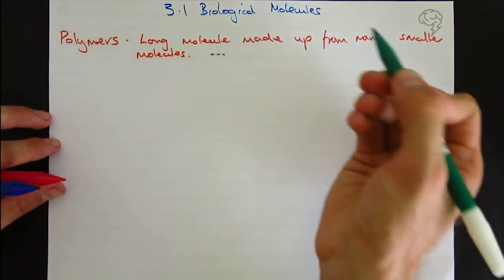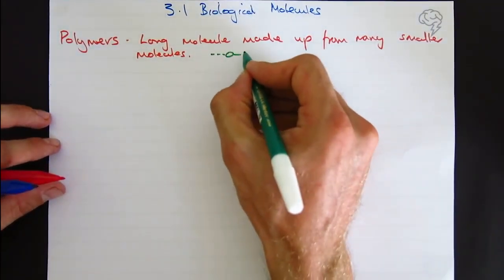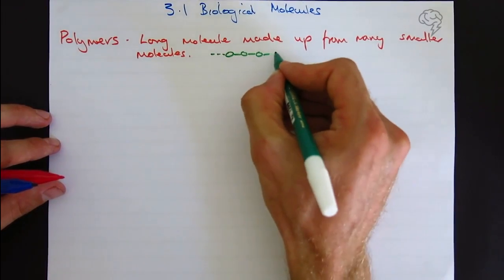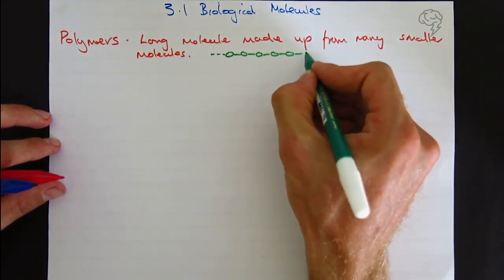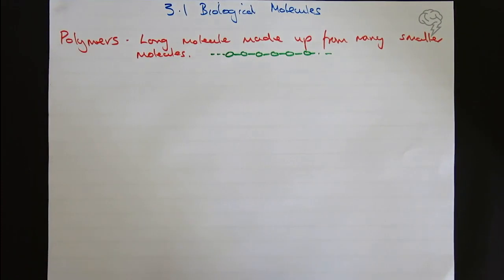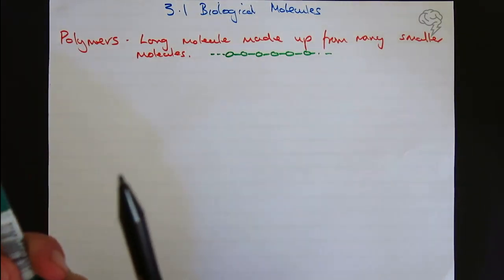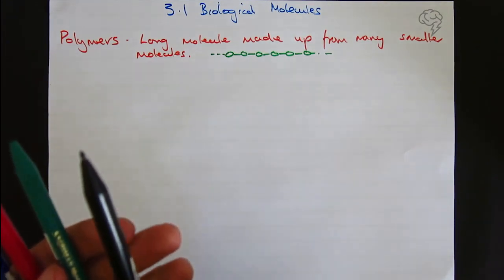Easy to draw out a diagram. The molecule continues, it's a long one, and it's like a train with lots of carriages forming a train. That's our polymer. Mer means unit, so lots of units means polymer.